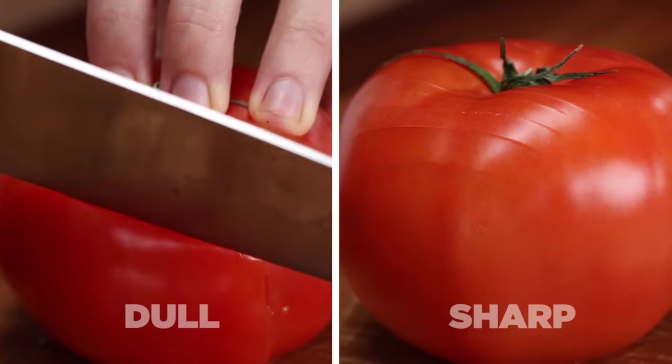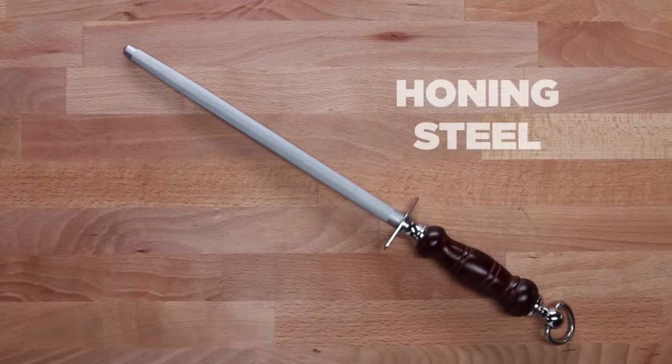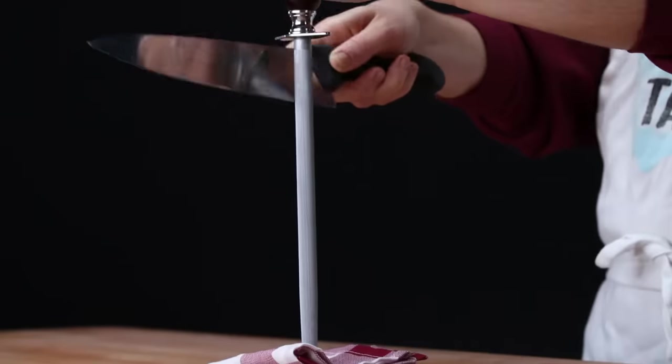So here are a few ways to keep your knives sharp and in good shape. So this is a honing steel, it's a common misconception that it sharpens your knife, it actually just hones the edge.